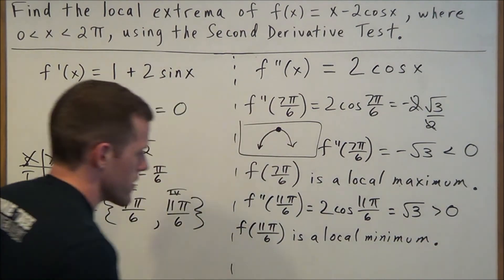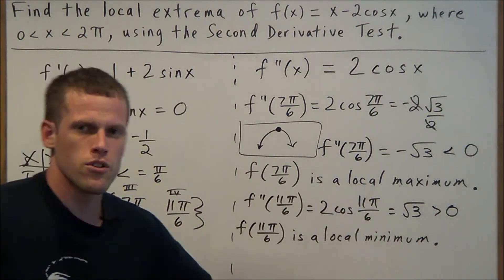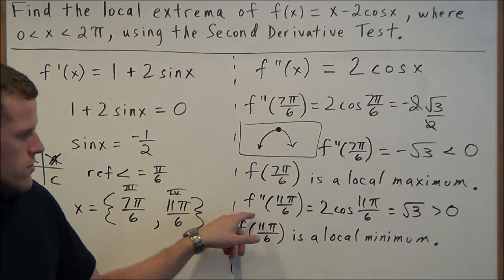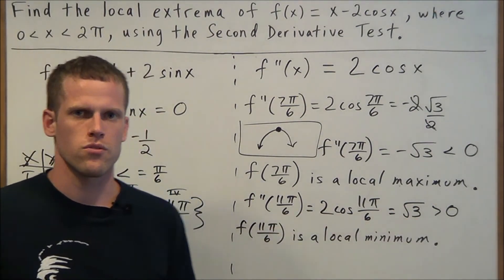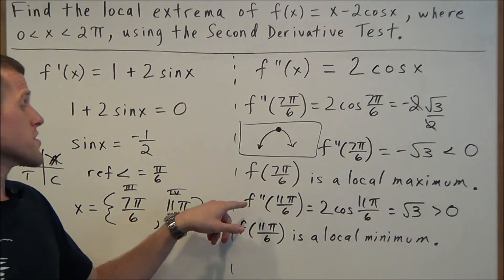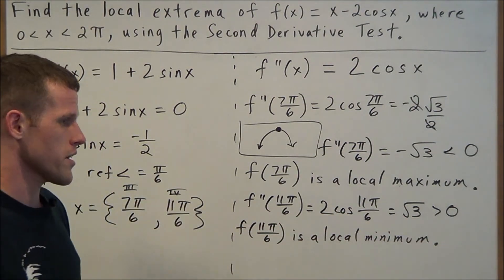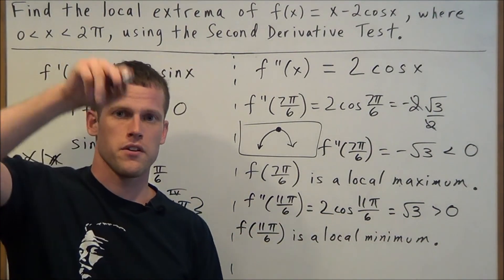Okay, and once again, if you forget what the conclusion here is, that when your second derivative is positive, is that a local max or a local min? Remember, when your second derivative is positive, that means your curve is concave up. So it's going to take this shape here.